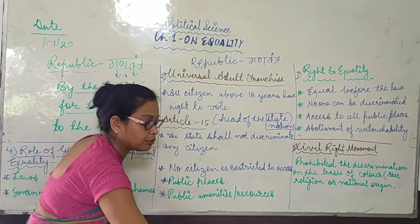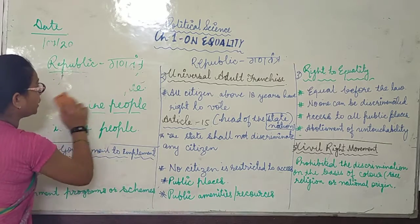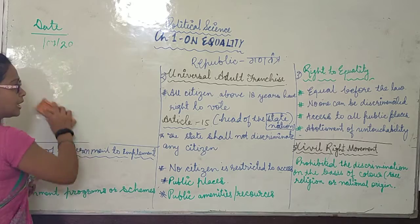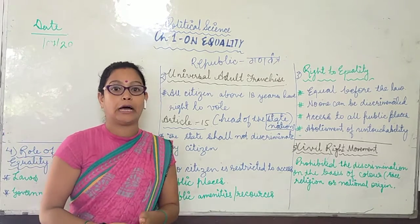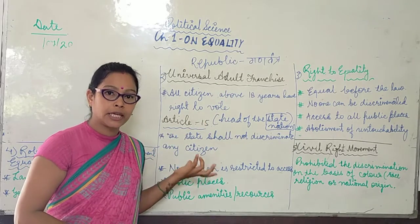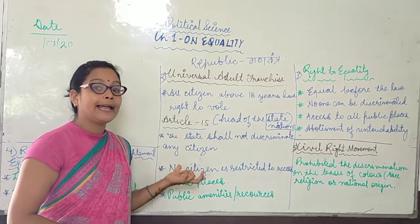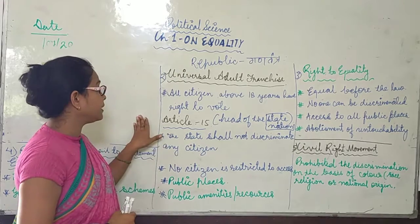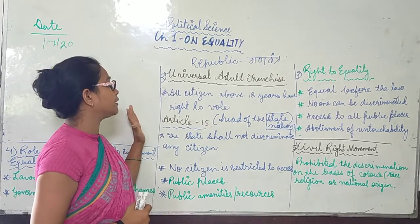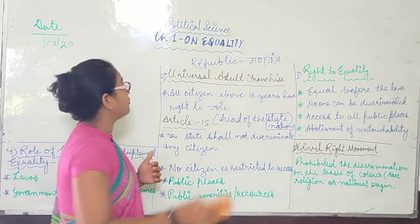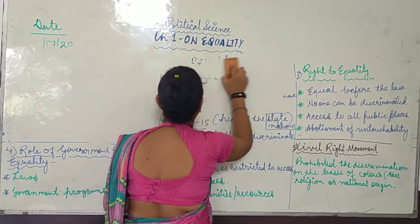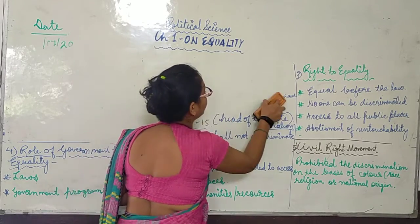So that was universal adult franchising — all people of a country above a certain age have the right to cast their vote and elect the head of the state. Now let's discuss the right to equality. Beyond voting rights, our government has given certain rights to its citizens. Let's discuss them one by one.